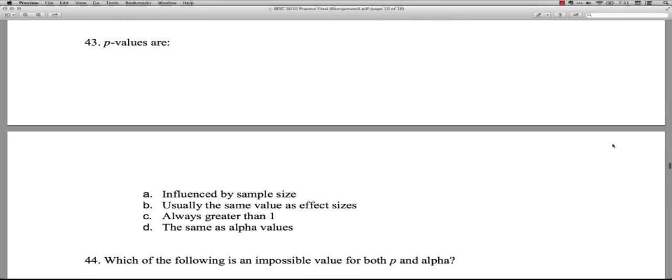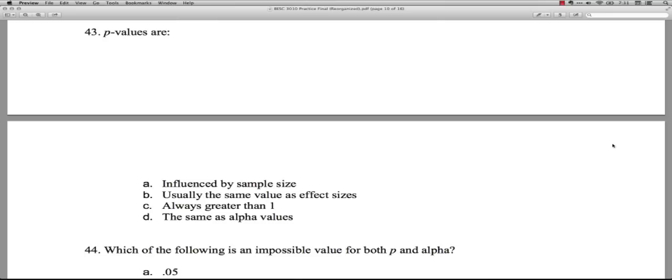Then we have a question split across a big gap here. Question 43: P values are A, influenced by sample sizes. That's true. You can take the same effect size, and if you have a big sample size it'll have a smaller P value. It'll be more likely to be statistically significant. P values are B, usually the same value as effect sizes? No, they're different, in part because they take into consideration the sample sizes. P values are C, always greater than 1? No, they're never greater than 1. They go from 0 up to a maximum of 1 but never greater. And D, the same as alpha values? No, the alpha value is a criterion, the baseline they use for comparing things. The P value shifts around, the alpha value stays put. So the answer for 43 is A. P values are influenced by sample size.